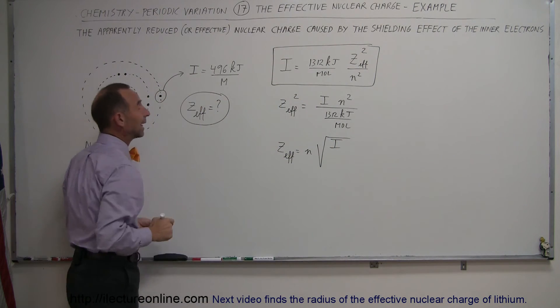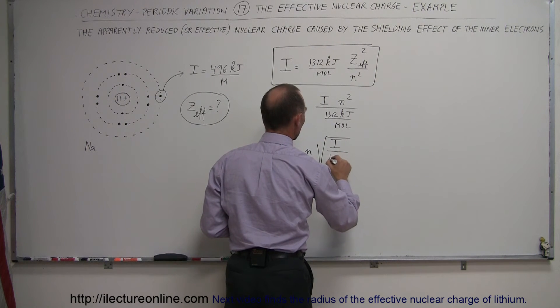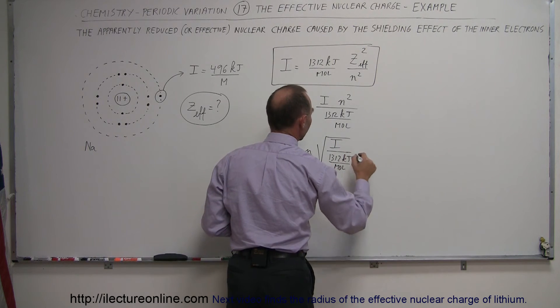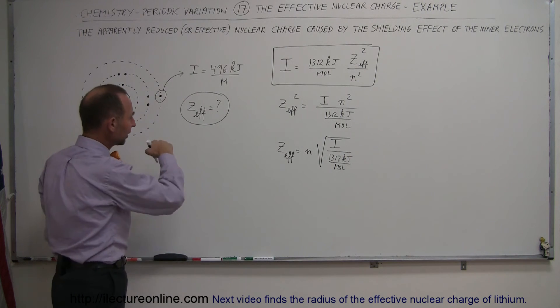In this case, ionization energy measured is 496 kilojoules per mole. And we divide that by the standard, 1,312 kilojoules per mole, which is the ionization energy for the lone electron in a hydrogen atom.